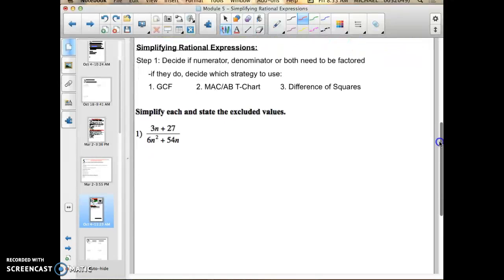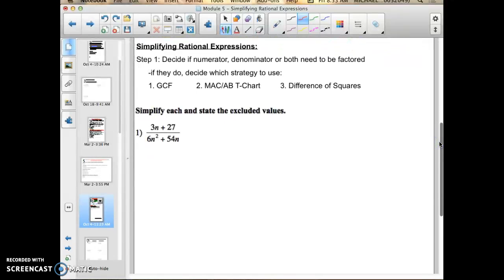So let's begin with an example. If I do number one, and I look at it and analyze the information, I would first say that it is indeed a rational expression, because it has a numerator and a denominator, a top and a bottom. So the first step in simplifying rational expressions is to decide if the numerator, denominator, or both need to be factored. I wrote that right here. And if they do decide what strategy to use, and these strategies should look familiar to you: you find the greatest common factor, you can use the MACAB T-chart, or you find the difference of squares.